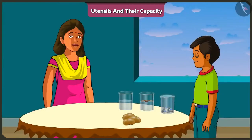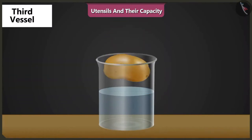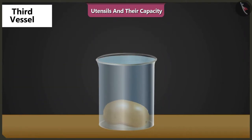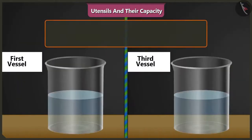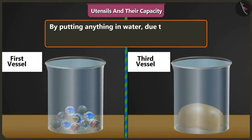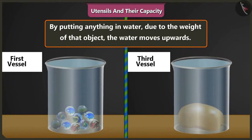Come on, Mishtu. Now let's drop these potatoes in the third vessel. Oh, wow! The water level in the vessel raised as soon as we dropped potatoes in it. So we saw that when we drop any object in water, due to the weight of that object, the water moves upwards.